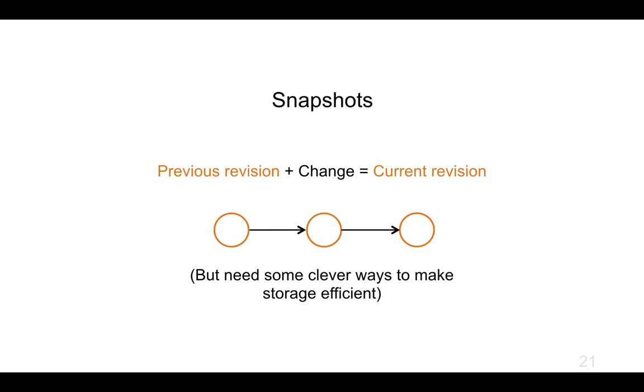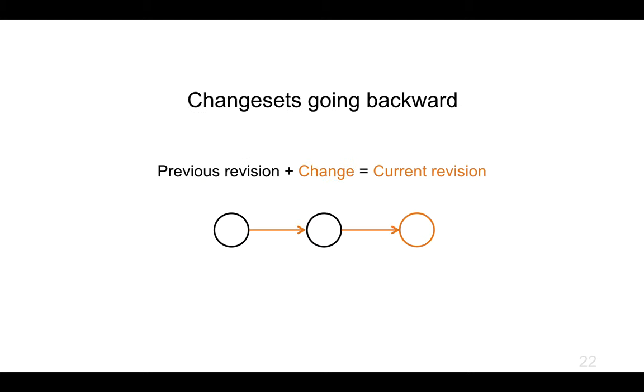We could decide that actually what we're going to do is we're going to store changesets going backwards. We're going to store the current, the latest version as is, which makes it really quick to go and grab that one. But for all of the previous ones, we're just going to store the patches going backwards. We're going to store a change that we'd be able to apply to calculate what the previous version was, and from that one we can apply the next change to calculate what the previous version from that one was. And this is very nice and efficient for getting the current version. But if you can imagine, if you're up to revision 1390 and you want to check out revision 2, you've got 1388 patches that it's going to have to apply to work out what revision 2 looked like, and so that could be a little bit slow.